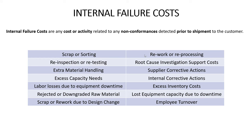Examples of internal failure costs include scrap and sorting, rework and reprocessing, re-inspection, and root cause investigation. When you're investigating a problem, there's an opportunity cost — you could instead be making improvements, reducing waste, or improving process capability. There's also extra material handling: when you have a non-conformance, you have to segregate non-conforming material and put it in a hold area, and there are costs associated with that. Extra capacity needs also arise — if your equipment routinely loses 10–15% yield, you need extra capacity to compensate, and all of that costs money and time.